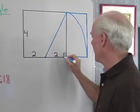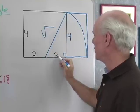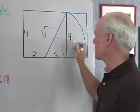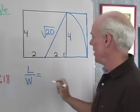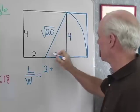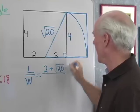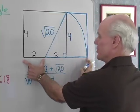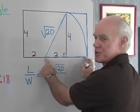Let's take a look and see. This side right here is 2, this side is going to be 4, so this diagonal will be the square root of 2 squared plus 4 squared: 2 squared is 4, 4 squared is 16, 4 plus 16 — square root of 20. When I want the ratio of length to width, that will be 2 plus this length right here — which is the same as this diagonal, so square root of 20 — all divided by the width, which is 4. So the ratio is (2 + √20) / 4.